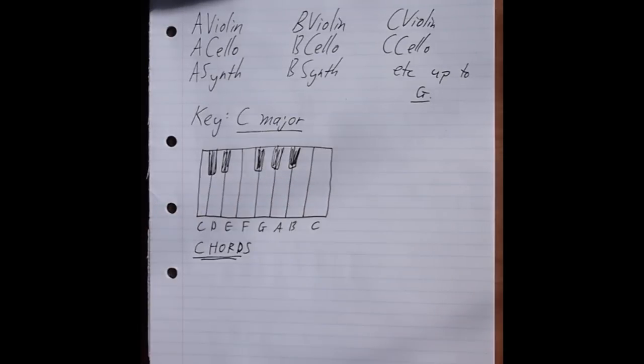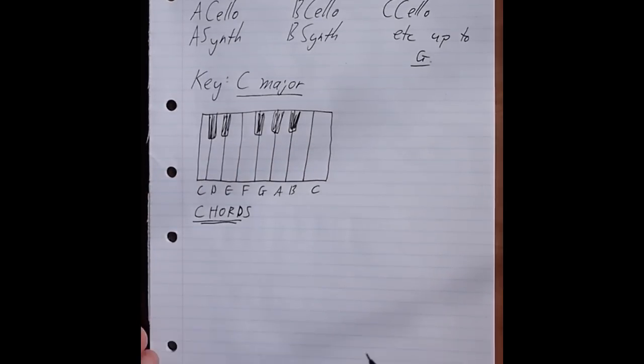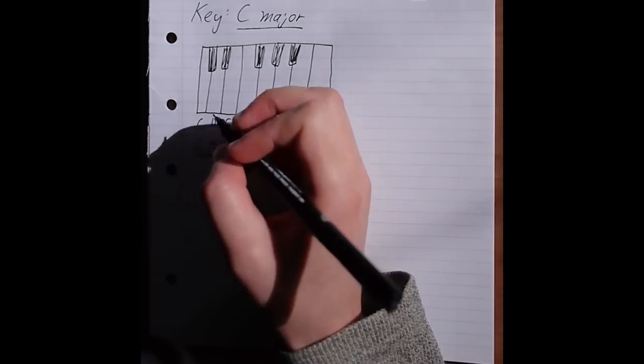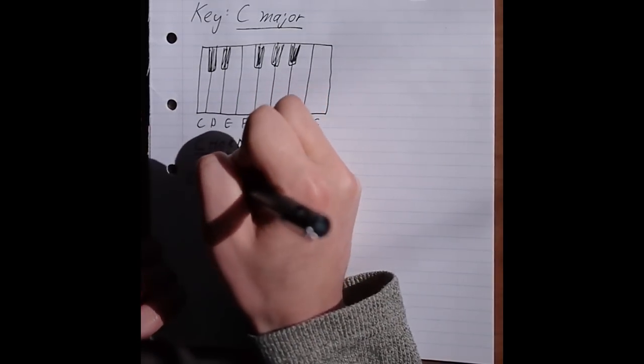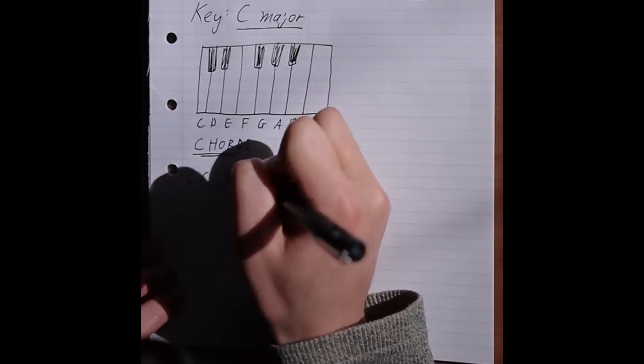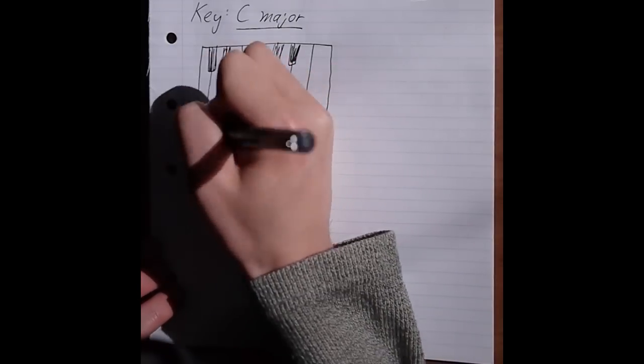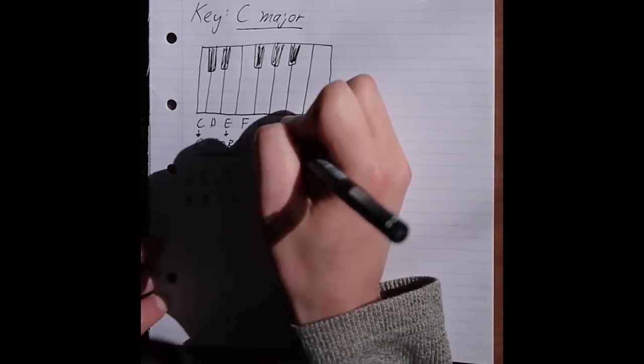So, the C major scale is C, D, E, F, G, A, B, and back to C again, with no black notes. That means a C chord starts on C, then up 2 to E, then up another 2 to G. D will be D, F, A.